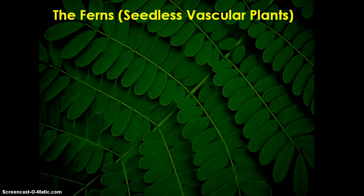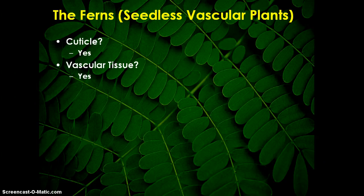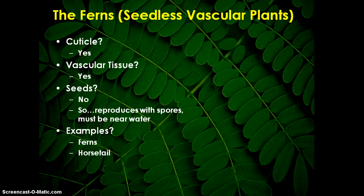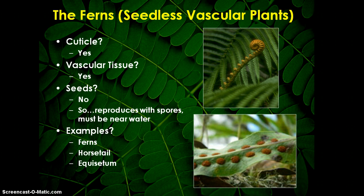Ferns are seedless but have vascular tissue, which means they can grow a little bigger than bryophytes. They do have a cuticle and vascular tissue, but since they don't have seeds, they're still tied to the water in order to reproduce. You'll never see ferns growing very far from water — they like to lean over the water because they need it to reproduce. Examples include ferns, horsetails, and equestiums — you may know them as cattails. You'll always find them somewhere near water.